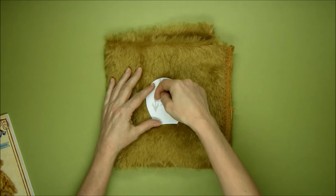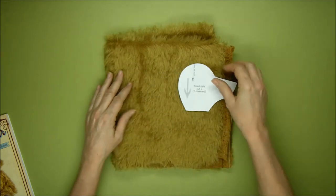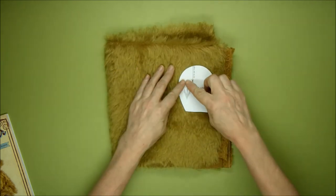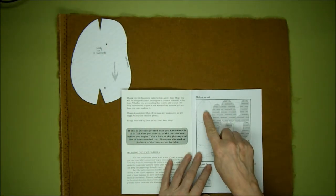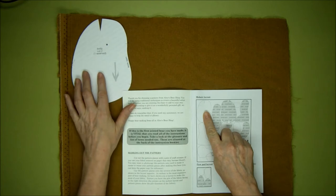And that direction from the base to the tip of the hair will match the arrow on your pattern piece. Now using the layout in your instruction booklet, you're going to start laying the pattern pieces out.